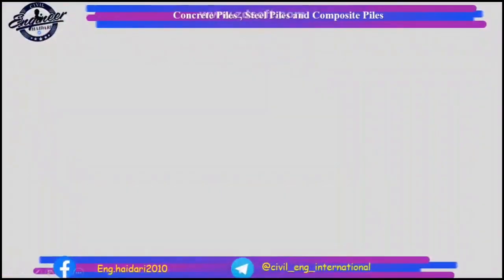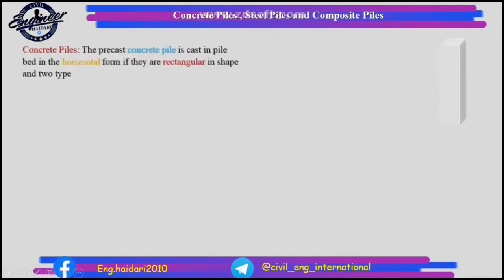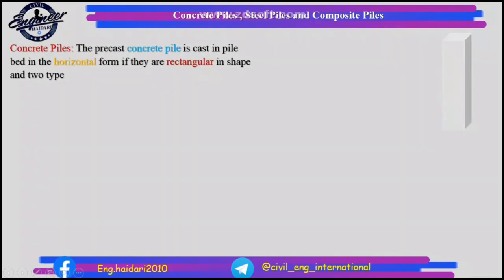Concrete piles: the precast concrete pile is cast in a pile bed in horizontal form if they are rectangular in shape.